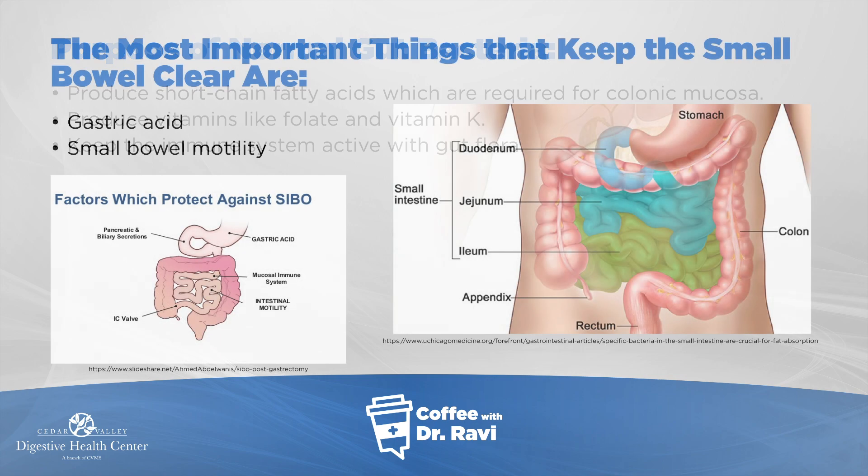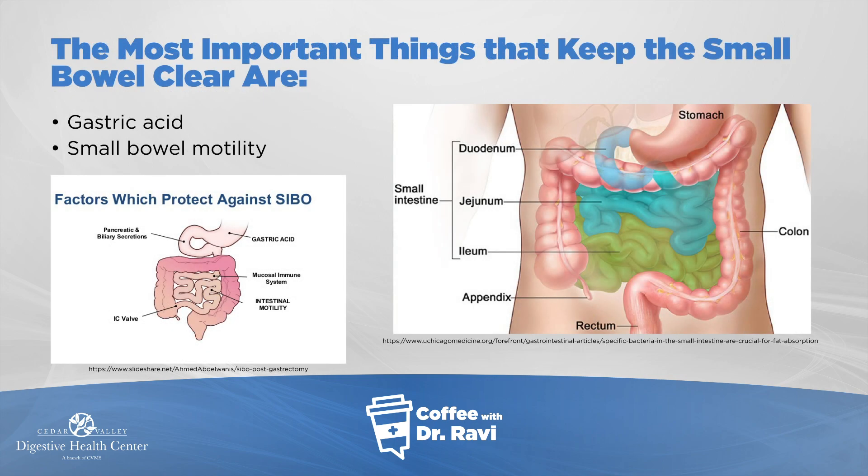How does the small bowel stay relatively bacteria free? It's predominantly because of two reasons. First, stomach acid is actually bacteria-killing, and when it gets into the small bowel it keeps it relatively sterile. Second, the small bowel has a housekeeping movement that keeps it free of debris and somewhat sterile.